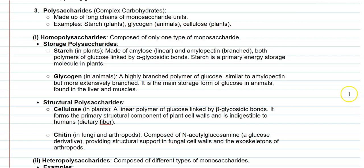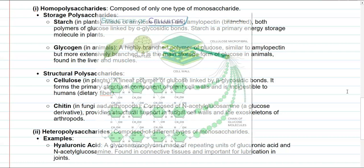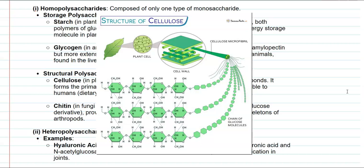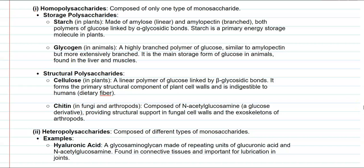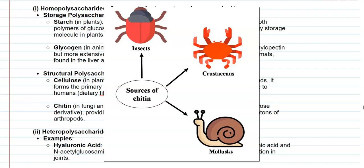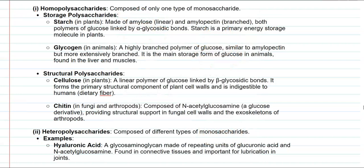Next is structural polysaccharides. Two classical examples can be discussed here. One is cellulose, commonly present in the cell wall of plants. It is a linear polymer made up of glucose linked by beta glycosidic linkages. It forms the primary structural component of plant cell walls and cannot be digested by the human system, since we do not possess the enzyme cellulase. The next structural polysaccharide is chitin, commonly present in the cell wall of fungi as well as in arthropods, for example crabs, which have a lot of chitin in their shell.